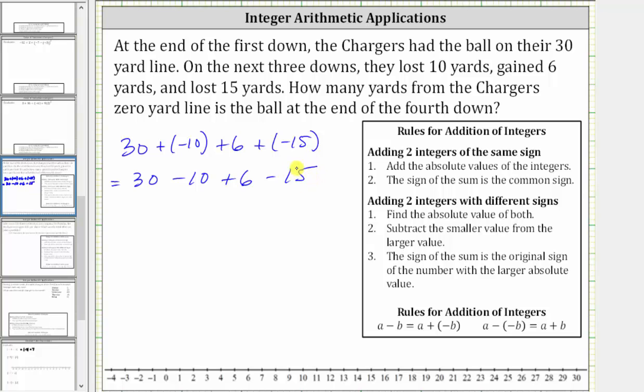So let's write this sum as 30 minus 10 plus six minus 15. And now since addition and subtraction have the same priority in the order of operations, we work our way from left to right.